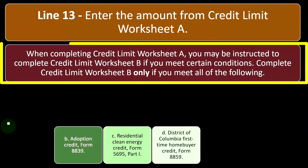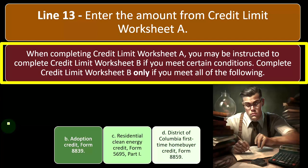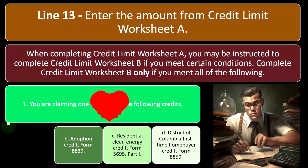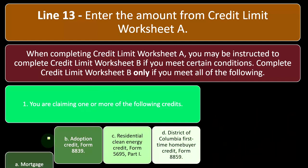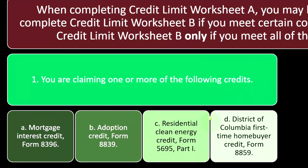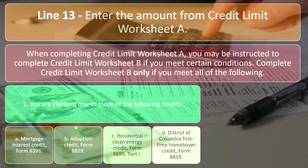When completing Credit Limit Worksheet A, you may be instructed to complete Credit Limit Worksheet B if you meet certain conditions. Complete Worksheet B only if you meet all of the following: One, you are claiming one or more of the following credits — A) mortgage interest credit, Form 8396; B) adoption credit, Form 8839; C) residential clean energy credit, Form 5695, Part 1; D) District of Columbia first-time homebuyer credit, Form 8859. These are more unusual situations that could complicate the calculation, possibly due to a modified AGI adjustment or something similar.